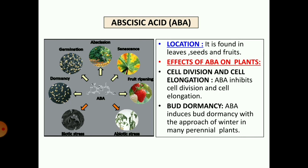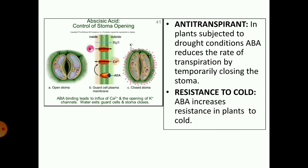Next we come to abscisic acid. It is a growth inhibitor, found in leaves, seeds, and fruits. Effects: cell division and cell elongation are inhibited — that means it inhibits growth of any type. Bud dormancy: abscisic acid induces bud dormancy, especially in the approach of winter in many perennial plants, helping them tide over unfavorable conditions. Antitranspirant: in plants subjected to drought conditions, abscisic acid reduces the rate of transpiration by temporarily closing the stomata. Resistance to cold: abscisic acid increases resistance in plants to cold.